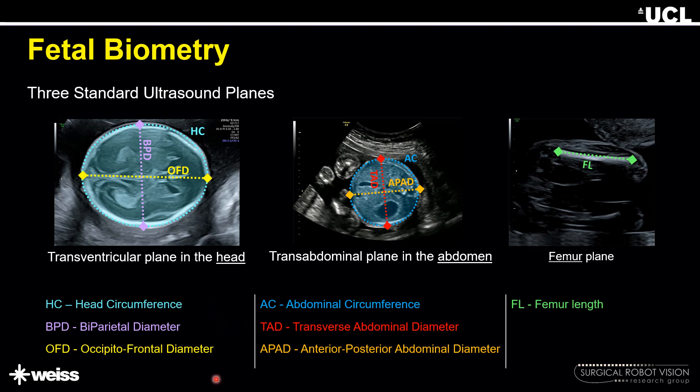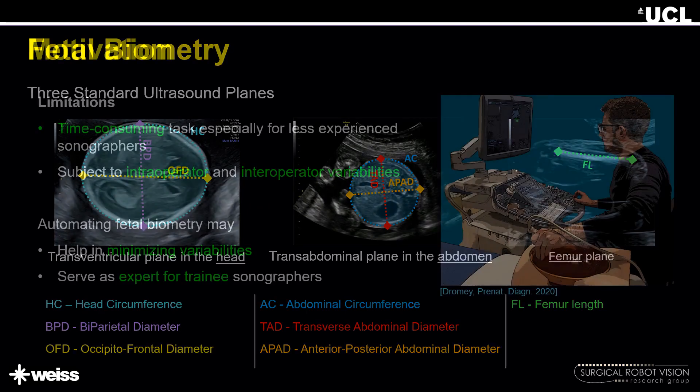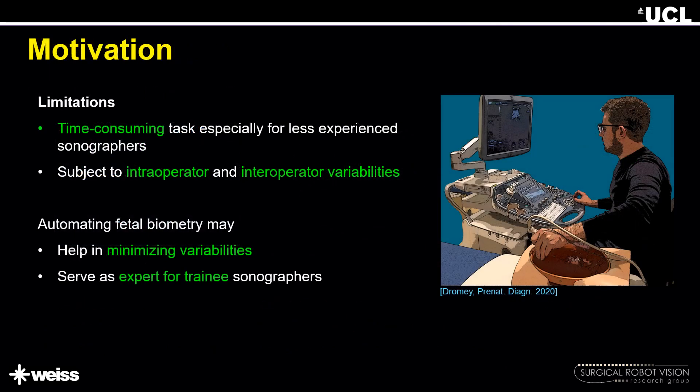Listed here are the measurements obtained by the sonographer by manually placing markers on key landmarks in these ultrasound planes. This is a time-consuming task, especially for less-experienced sonographers, and it is subject to high intraoperator and interoperator variability. Automating fetal biometry on the standardized plane can help in minimizing these variabilities, especially for less-experienced sonographers, and may also serve as an expert tool for training.